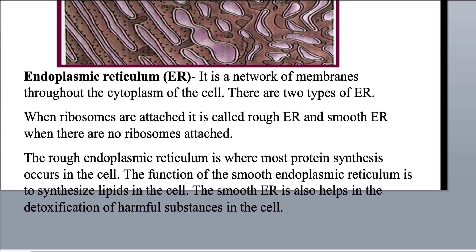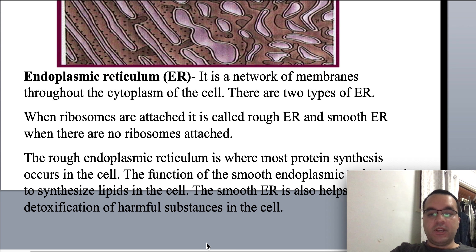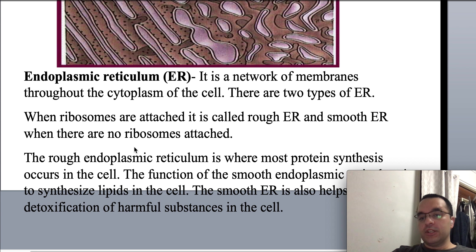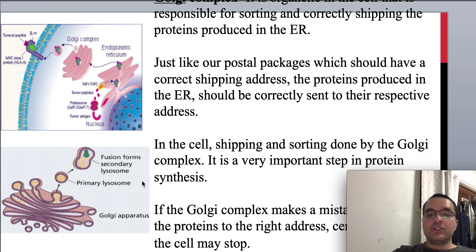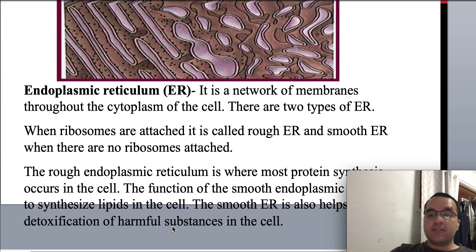Endoplasmic reticulum is a network of membranes through the cytoplasm of the cell. There are two types: smooth endoplasmic reticulum and rough endoplasmic reticulum. The difference is that when ribosomes are attached, it is called rough endoplasmic reticulum; smooth endoplasmic reticulum does not have ribosomes attached. Ribosomes are organelles responsible for protein production. The rough endoplasmic reticulum is where most protein synthesis occurs in the cell, while the smooth endoplasmic reticulum is responsible for producing lipid content required for cell function.